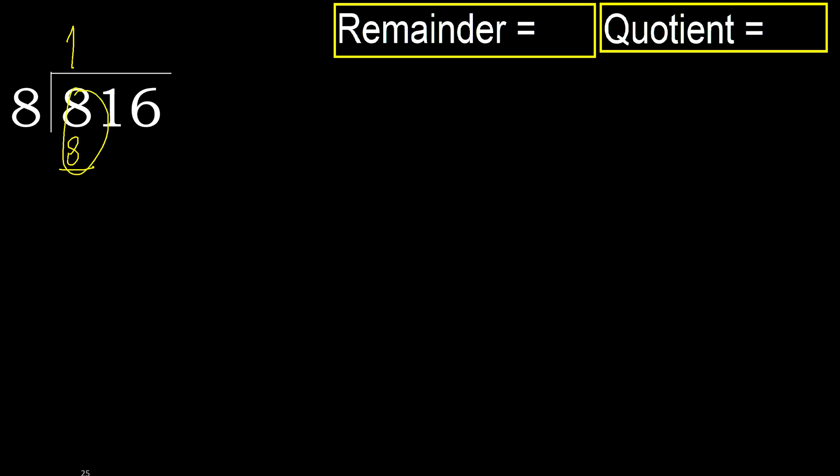Subtract. 8 minus 8 is 0. Next. Eliminate. 0, ok.